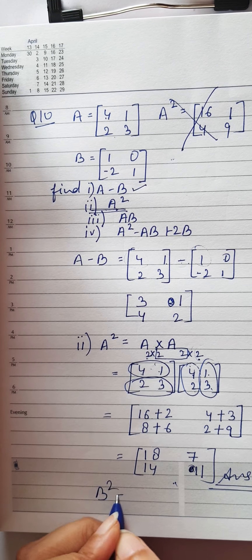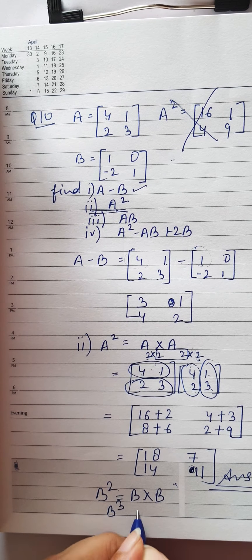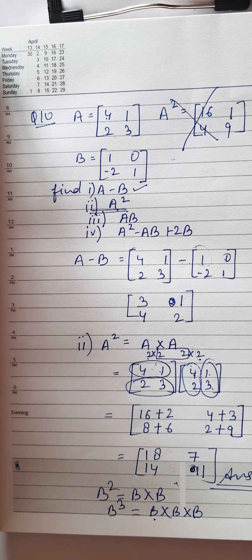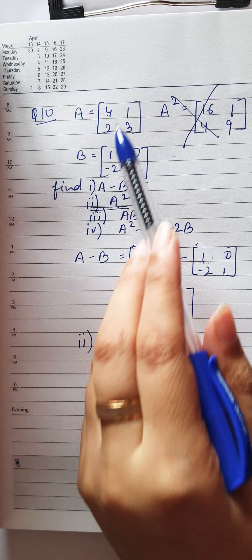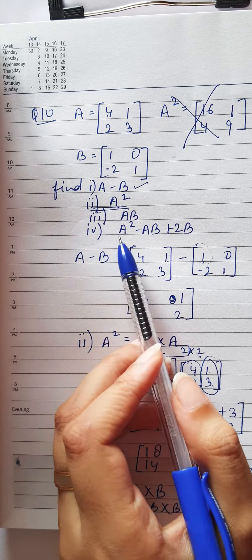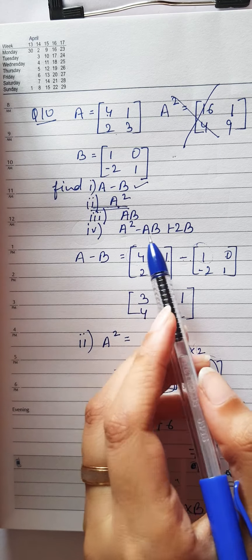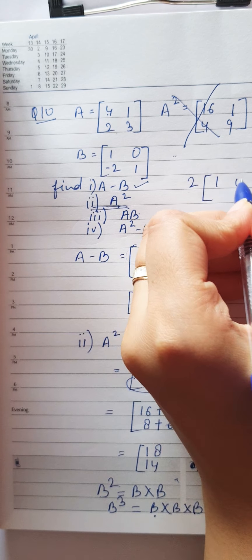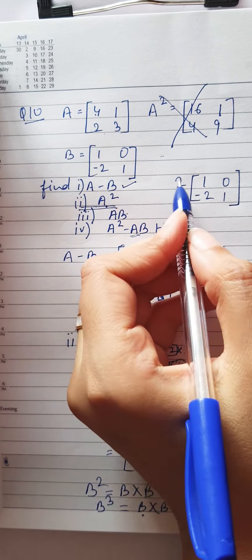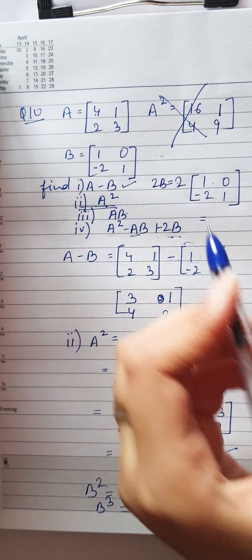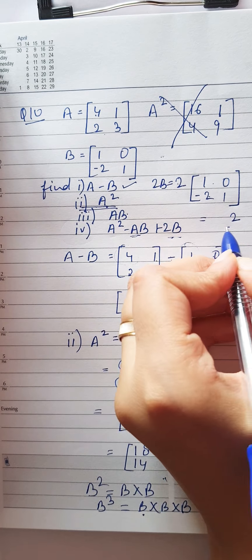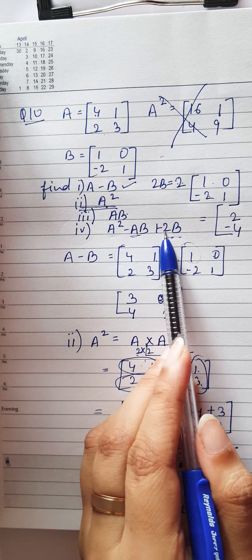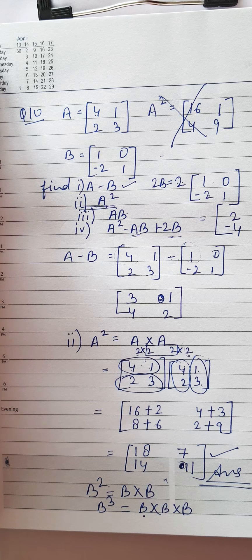If you have to find B², you do B into B. For B³ you multiply B into B into B — that many times. You cannot just cube the elements. Next: A×B is computed by standard matrix multiplication. For 2B, that is scalar multiplication — multiply 2 with every element of B, giving the matrix 2B. Then you combine A², A×B, and 2B using the corresponding operations specified in the question.